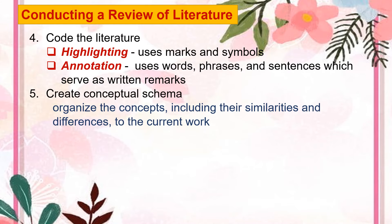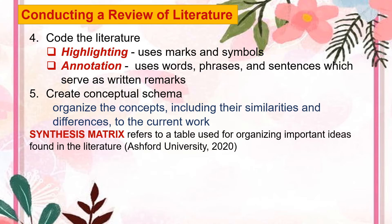Fifth, create a conceptual schema. After coding the concepts perceived to be important, the researcher may then organize them in order to see in a wider perspective the relevance, including similarities and differences to the current work. The researcher may utilize a literature review synthesis matrix to better see how gathered data from literature review will be presented. As cited from Ashford University in 2020, a synthesis matrix refers to a table used for organizing important ideas found in the literature. This matrix further allows the researcher to see overlapping ideas among the authors.